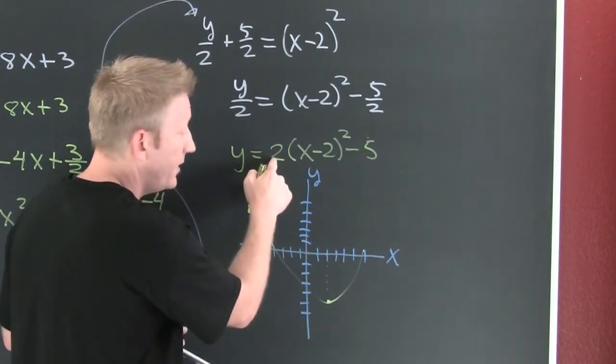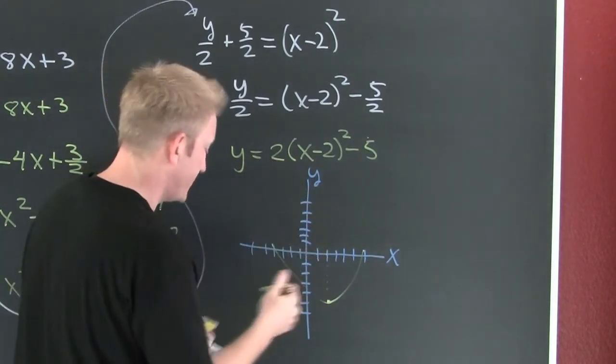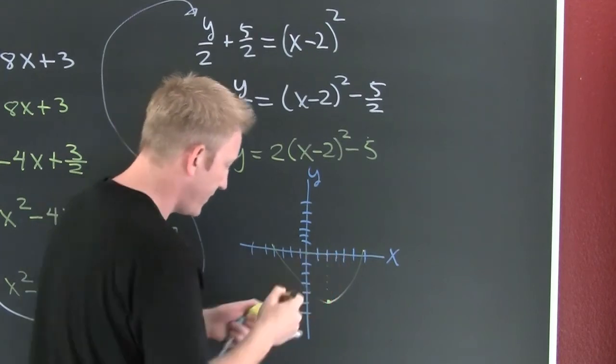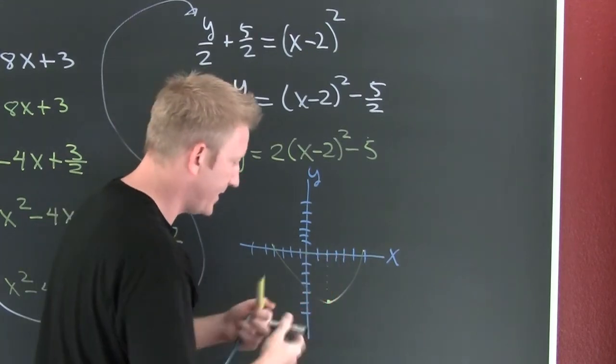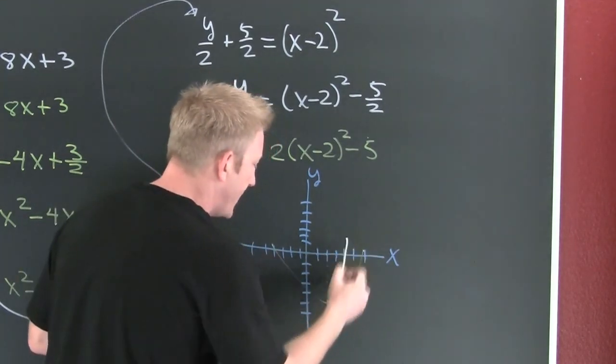Because the leading coefficient is 2, it's going to be extra skinny — so instead of a wider parabola, it would be like this, narrower.